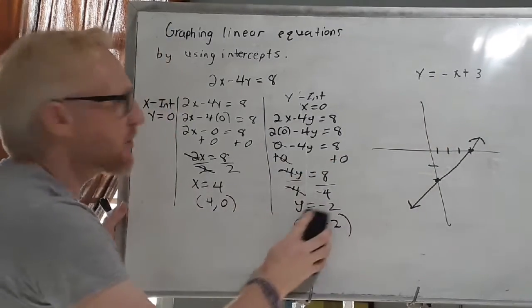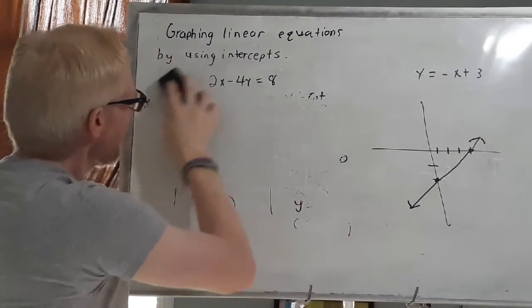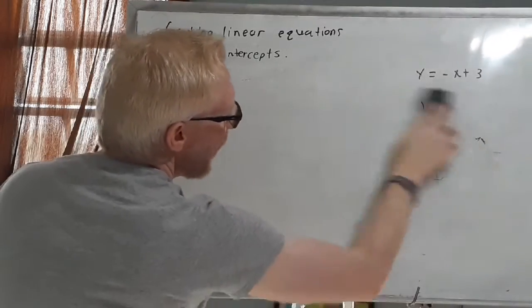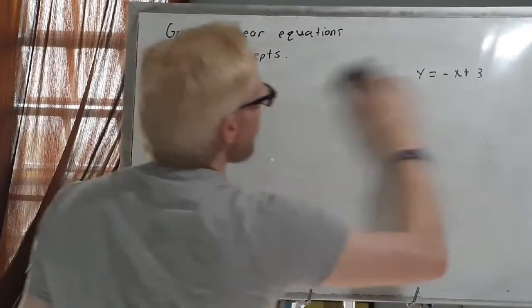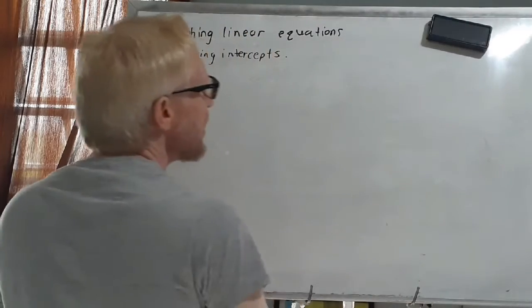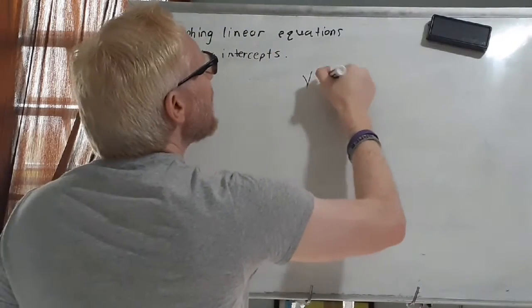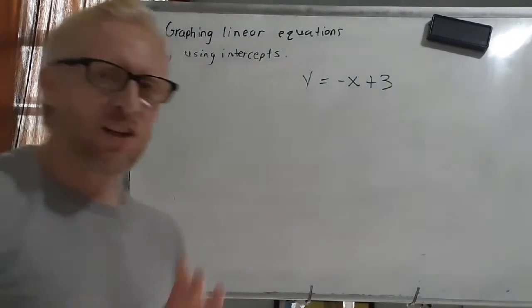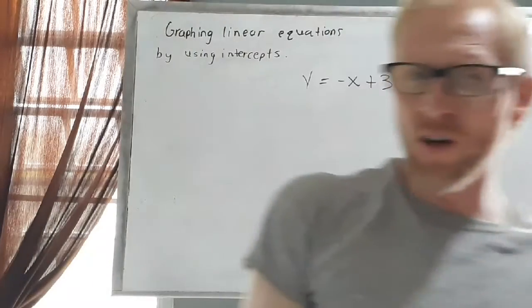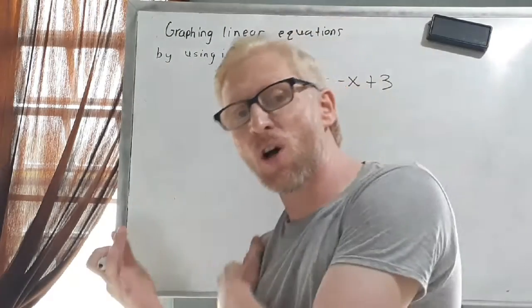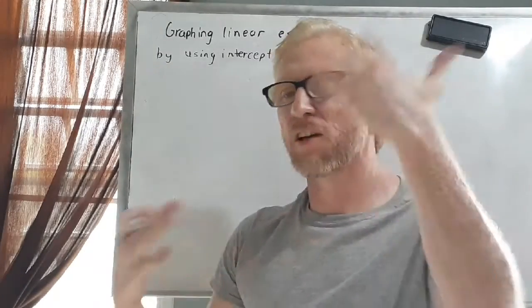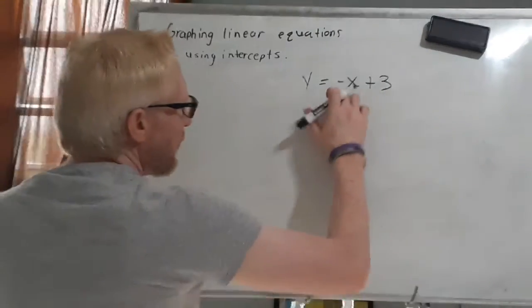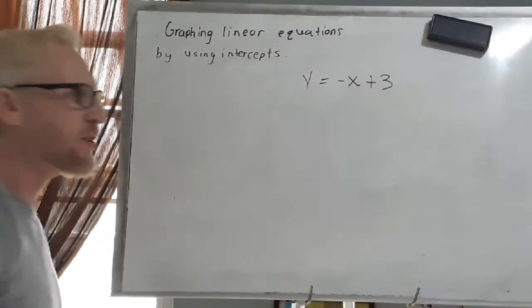Now let's look at the last example and then we'll be done with this video lesson. In this exercise we have y equals negative x plus 3. Something interesting here: in our previous example the equation wasn't solved for y, so I just plugged in zeros. Here, not only is the equation already solved for y, but I also have a negative x. However, the steps are the same — I'm going to look for my x-intercept.